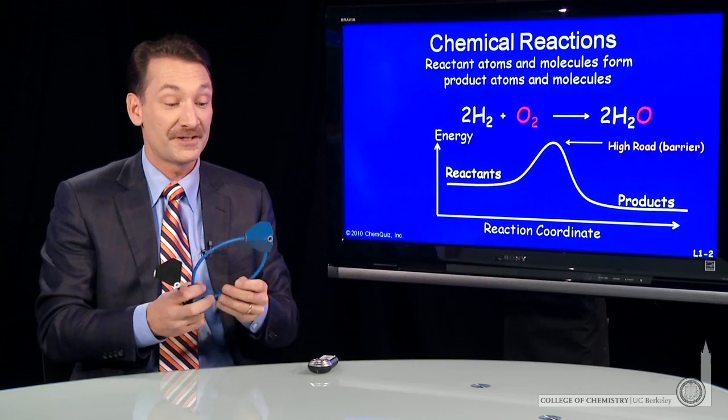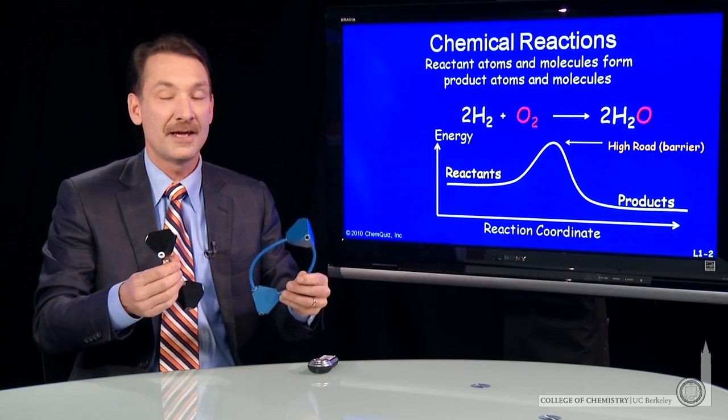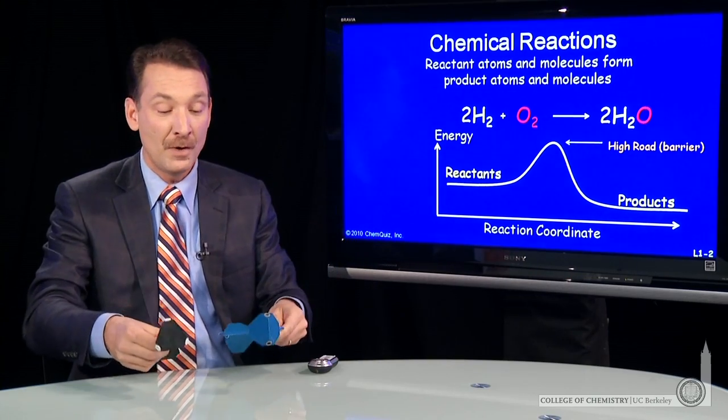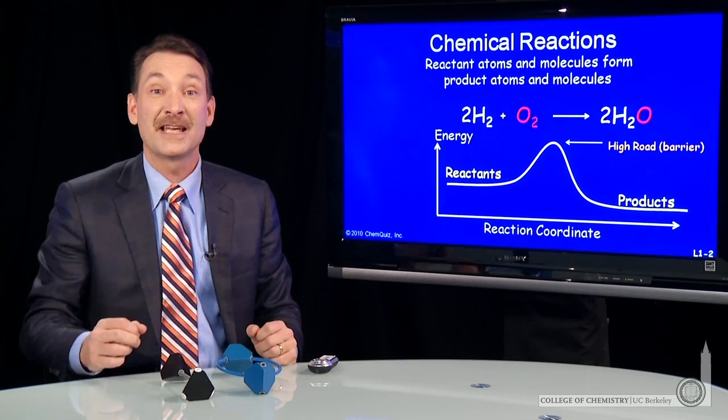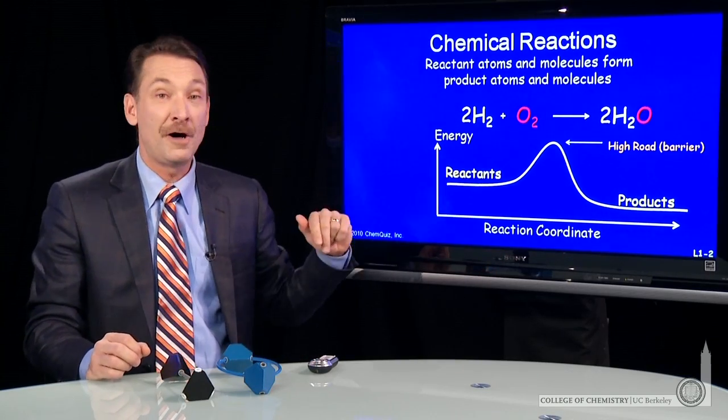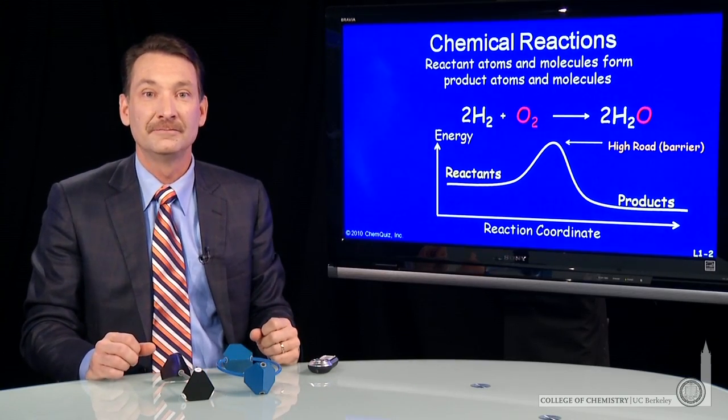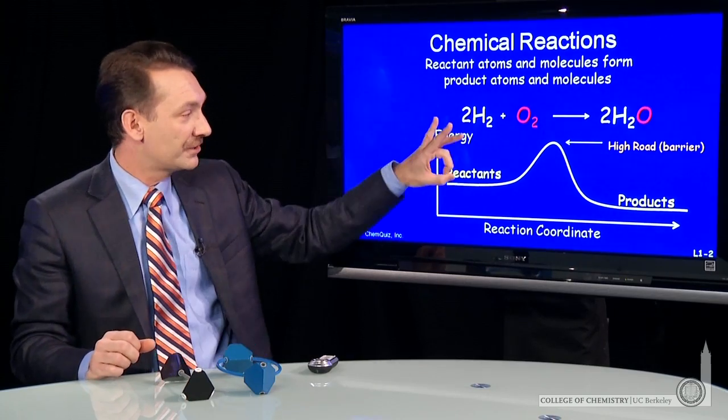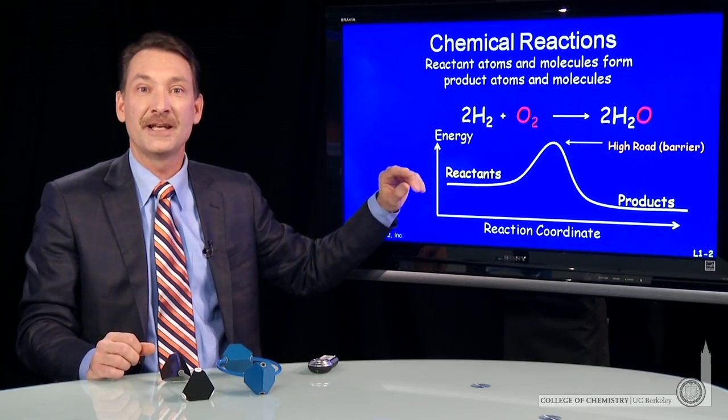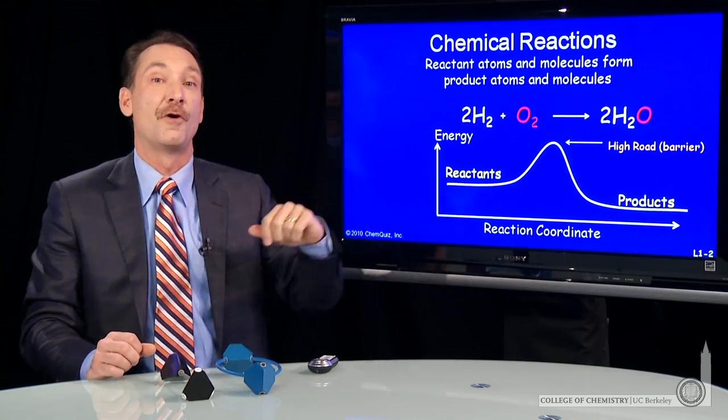And you might say, well, if there's that high road barrier, why do they ever react? Well, let's go back to the mechanical example. If I had a ball here, could I get it to the other side of that hill? Well, sure. One way I could get it was to flick it, give it some kinetic energy, and have it roll up over the hill.